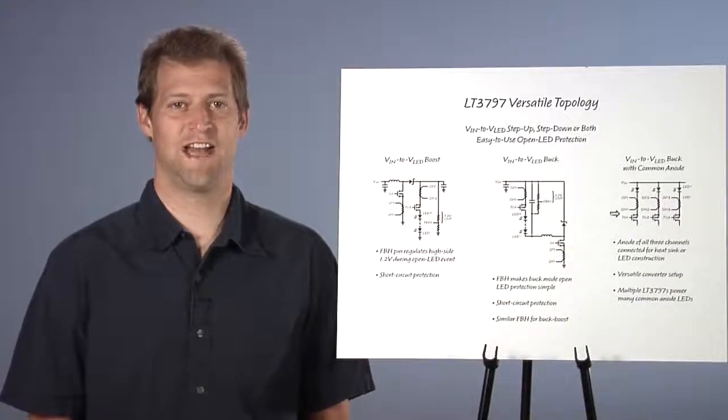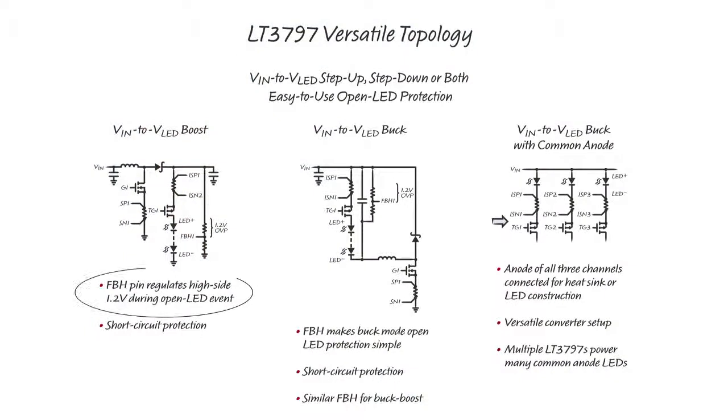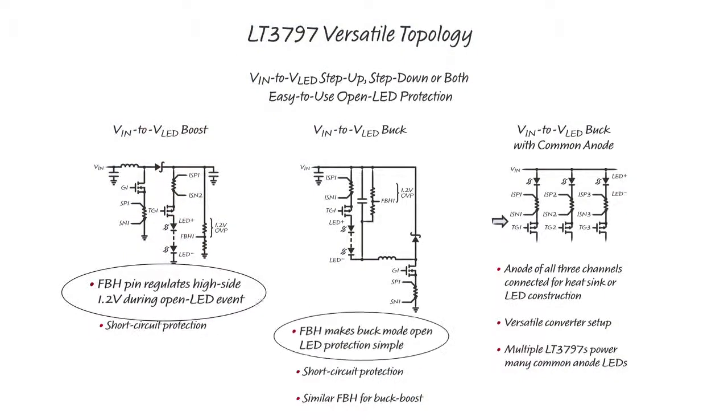The high-side FBH pin of the 3797 allows for simple over-voltage protection with a two-resistor setting in all topologies.